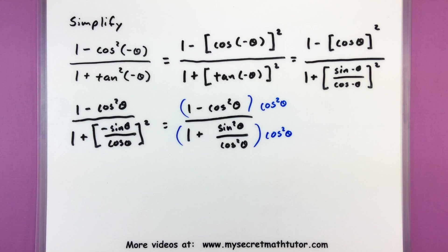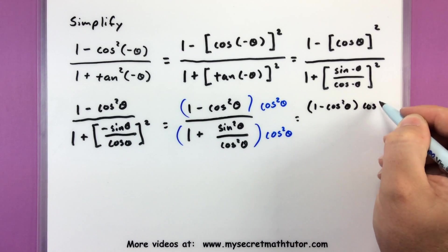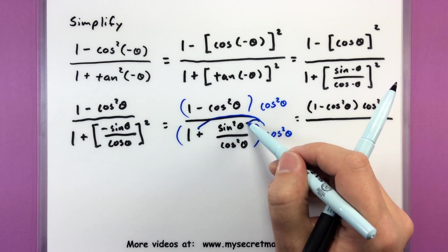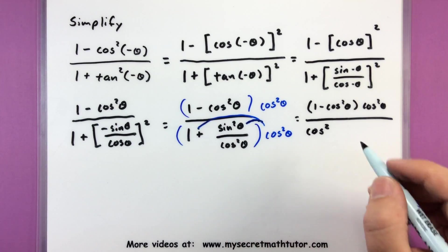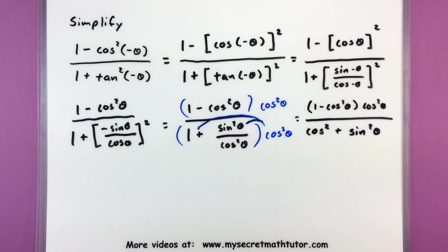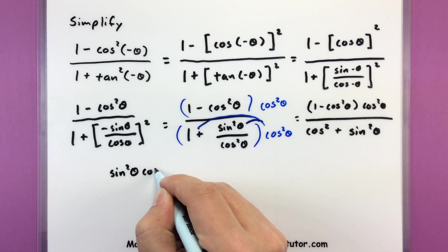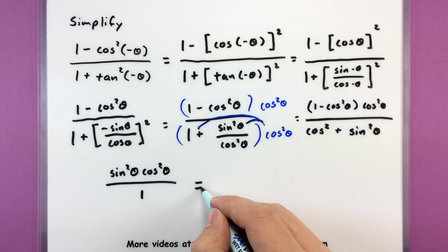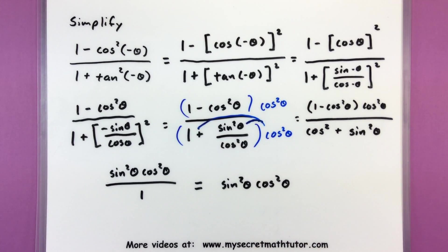Let's see what that gives us. On the top, we have 1 minus cosine squared of theta multiplied by cosine squared of theta. For the bottom, cosine squared distributes into both pieces: to the 1 it's just cosine squared, and to the sine squared over cosine squared the cosine squareds cancel, leaving only sine squared. Now it's a good time to use our Pythagorean identities. The first one I see is 1 minus cosine squared — that's simply sine squared. The other Pythagorean identity on the bottom is cosine squared plus sine squared, which equals 1. So when the dust clears, I simply have sine squared of theta multiplied by cosine squared of theta. That's nice and simplified.